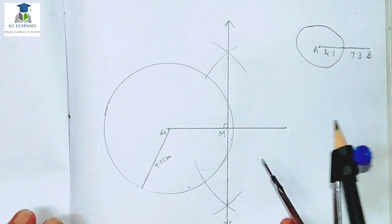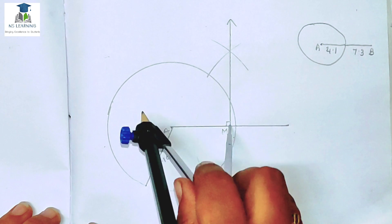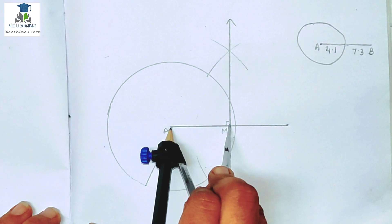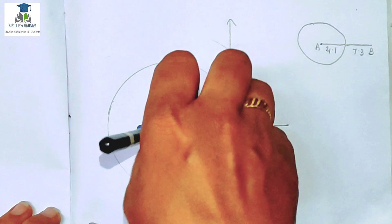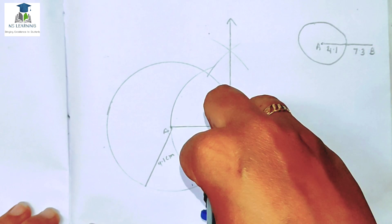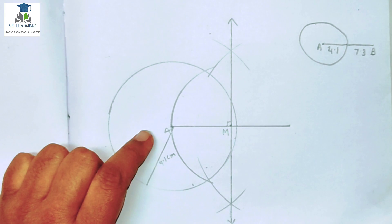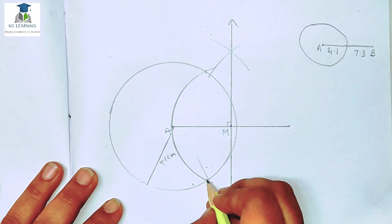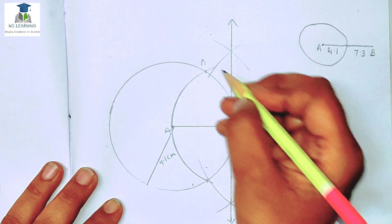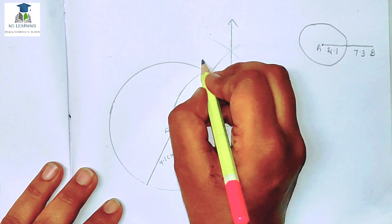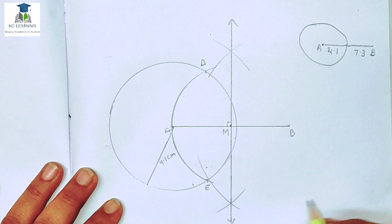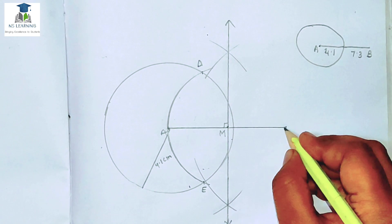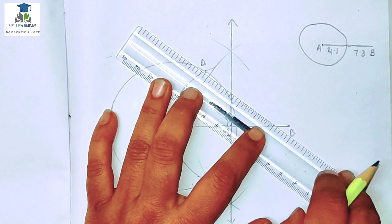Perpendicular मिलने के बाद circle के center point पर जाना है। Center पर आने के बाद center से perpendicular M पर एक arc draw करना है — यह arc semi circle होगा। Semi circle draw करने के बाद जो cut points मिले हैं — point of intersection — वो circle पर हैं। उन्हें name दिया D और E। D और E को इस point B से join करेंगे — यही हमारा tangent होगा।